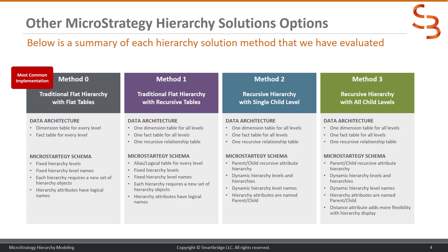Method 1 is a slightly modified version of Method 0. Instead of maintaining different dimension tables for each level in the database, we maintain one dimension table for all the levels and then create views on the MicroStrategy side. We then define the objects and relationships between them on the MicroStrategy side. Then we'll look into the new recursive way of modeling hierarchies, which enables us to handle not just traditional top-to-bottom hierarchies but also dynamic ones.